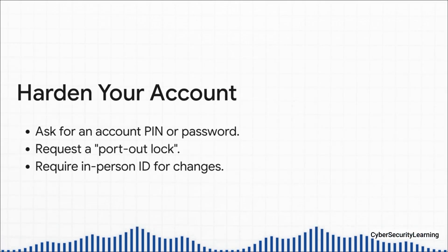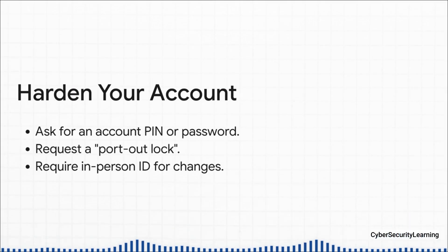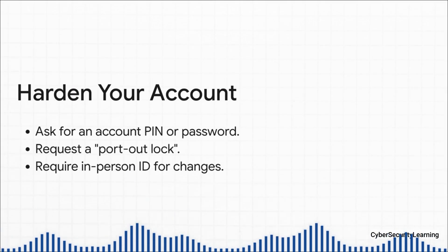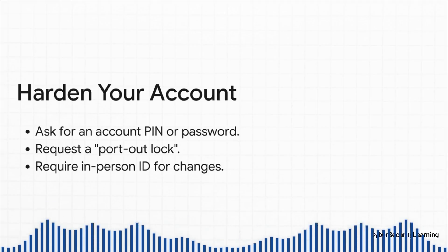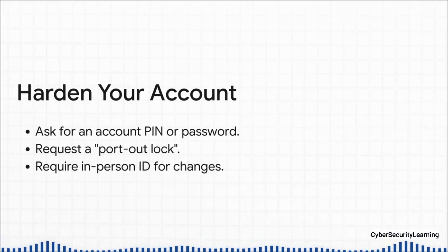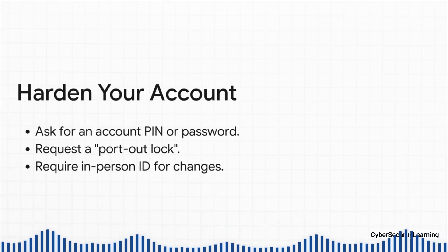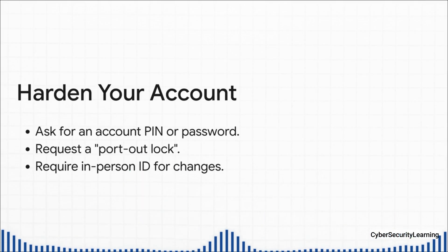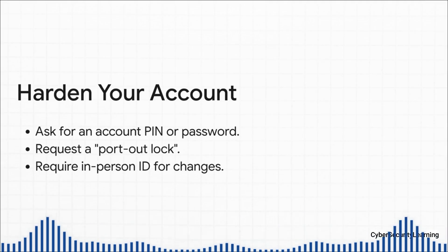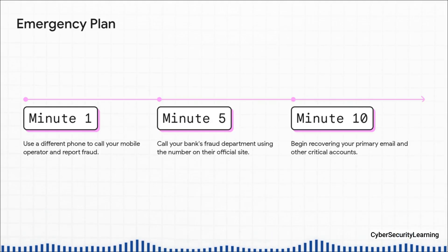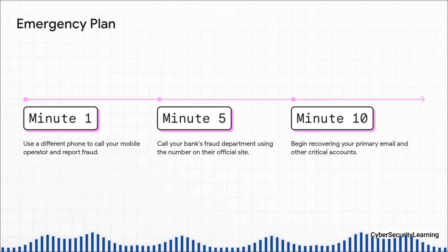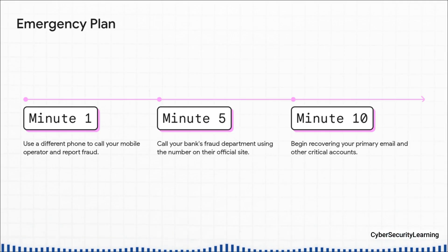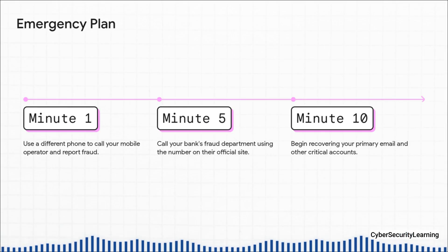To harden your account, call your phone company today. Ask them to add a security PIN or password to your account — an extra password required before anyone can make changes. Make sure it's unique. Then ask if they have a port-out lock, which makes it much harder to transfer your number to a different company. You can also often request that major changes like a SIM swap can only be done in person at a store where you must show a government ID. If your phone suddenly loses service, call your mobile operator from another phone immediately and tell them you think you've been SIM swapped. Then call the fraud departments at your banks using the number on the back of your debit card.